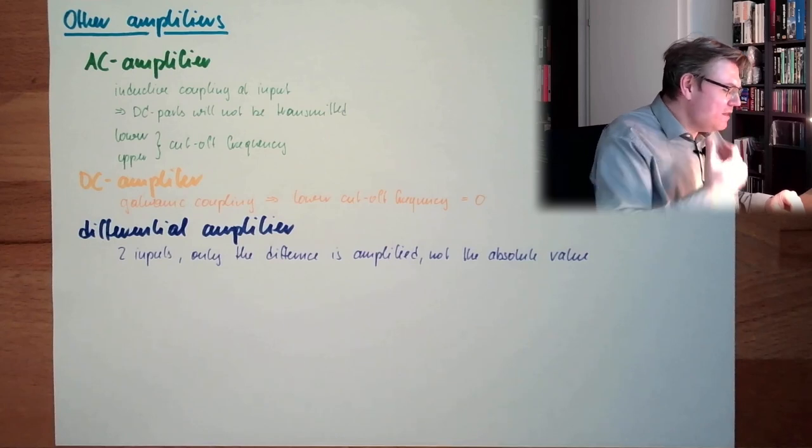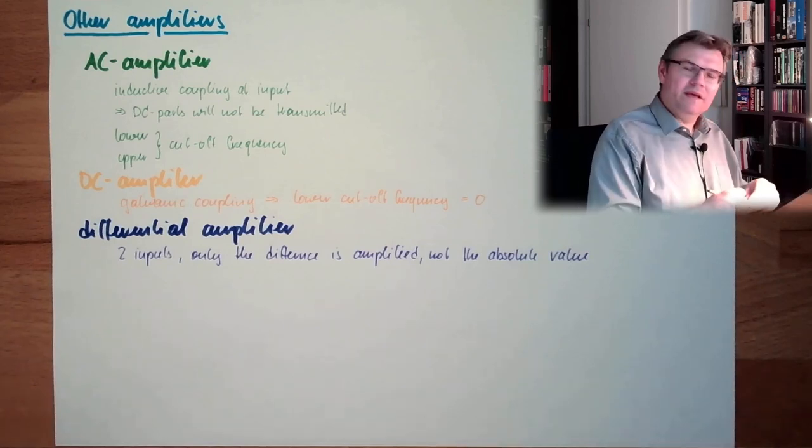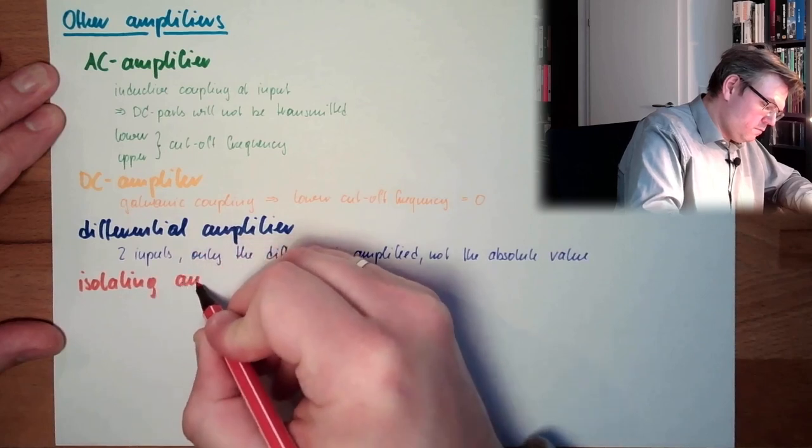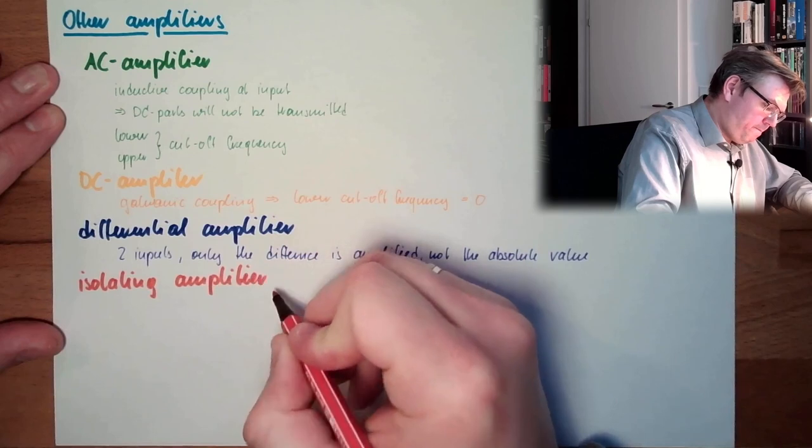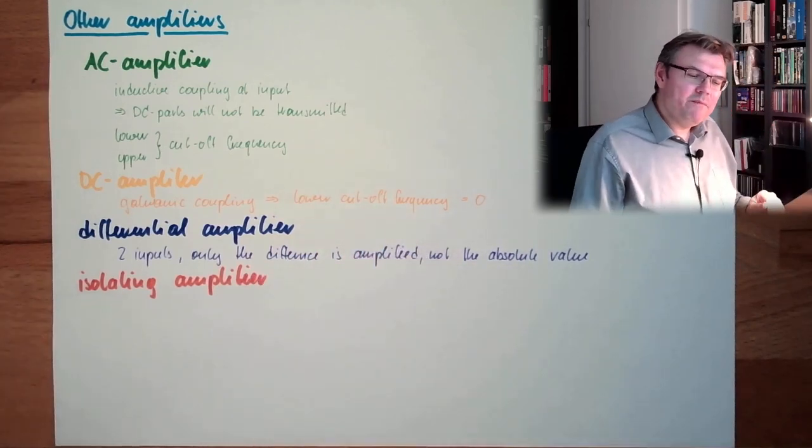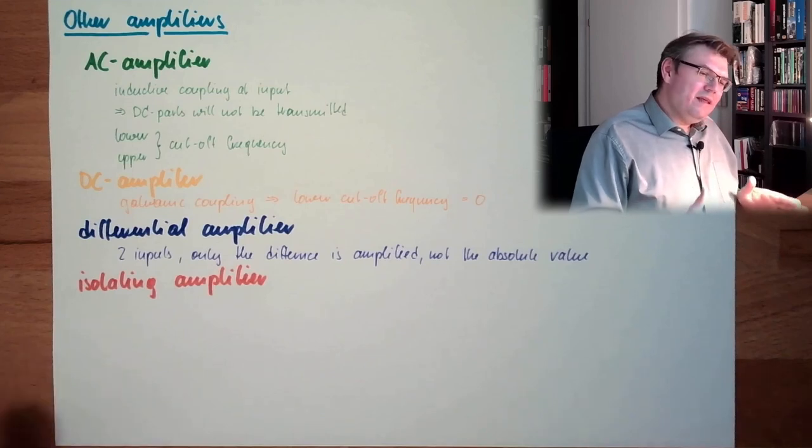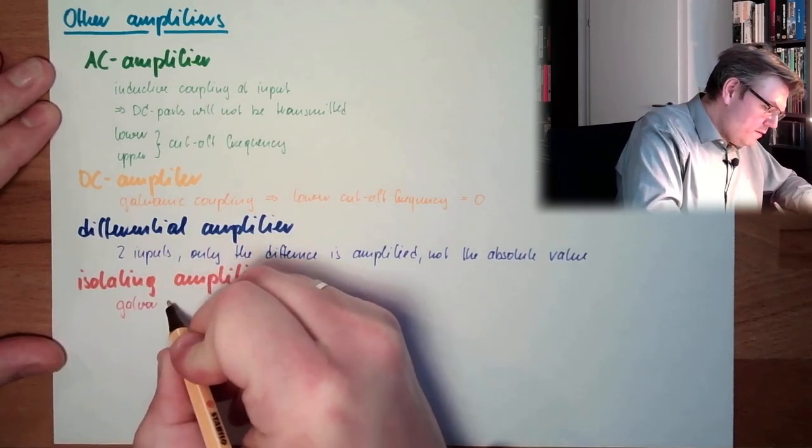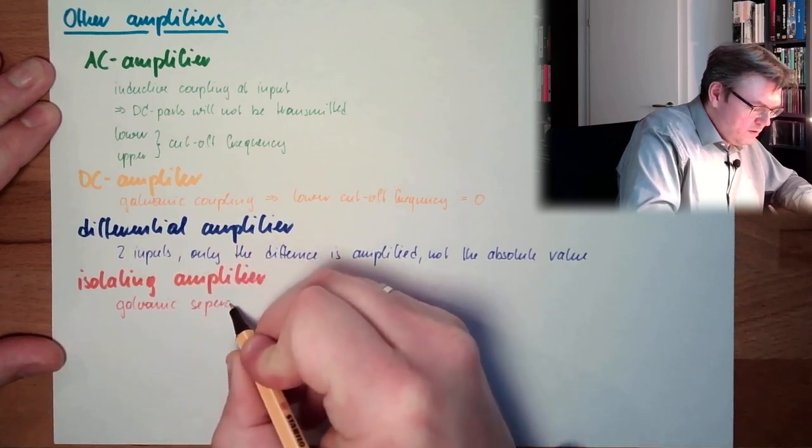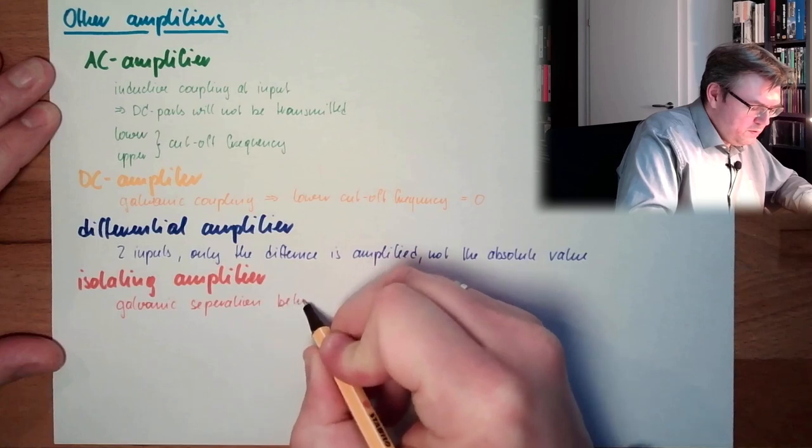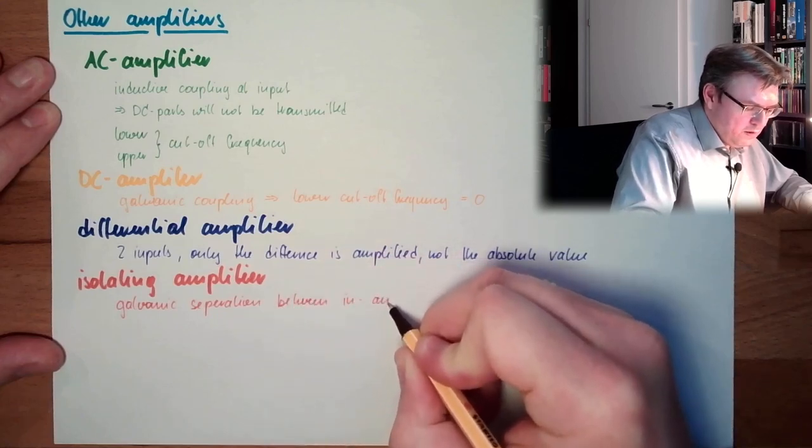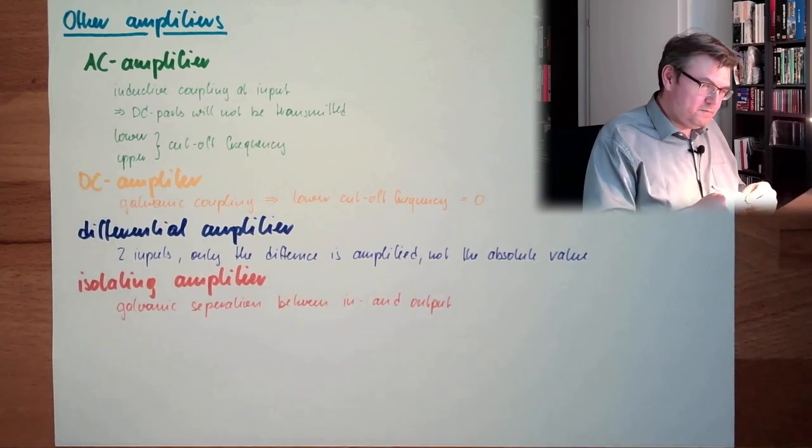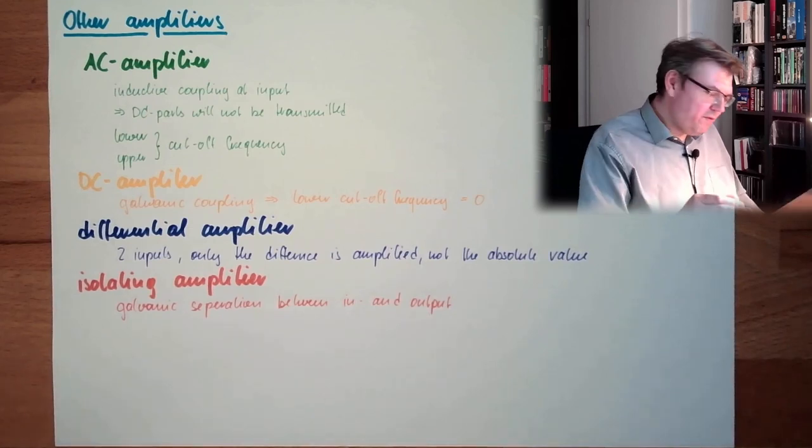And then we have something which sounds a little bit strange. Isolating amplifier. What's that? An isolating amplifier separates the input from the output galvanically. The galvanic separation between in and output. So there is no connection other than logic. There is no wire coming from the input to the output.